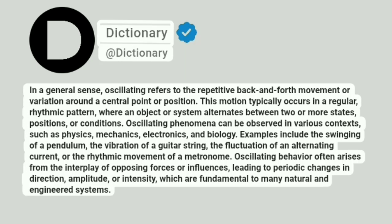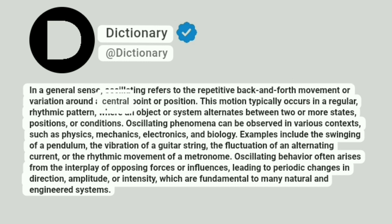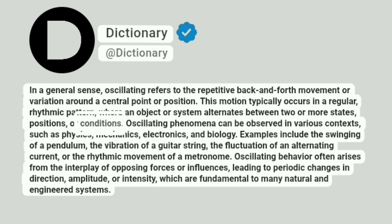Dictionary. At Dictionary. In a general sense, oscillating refers to the repetitive back-and-forth movement or variation around a central point or position. This motion typically occurs in a regular, rhythmic pattern, where an object or system alternates between two or more states, positions, or conditions.